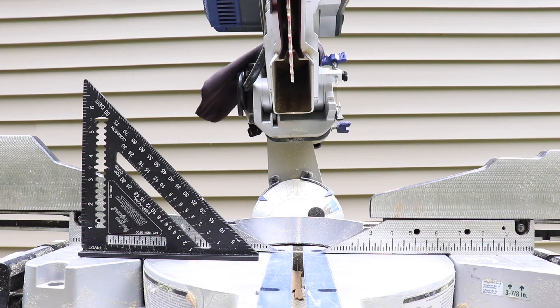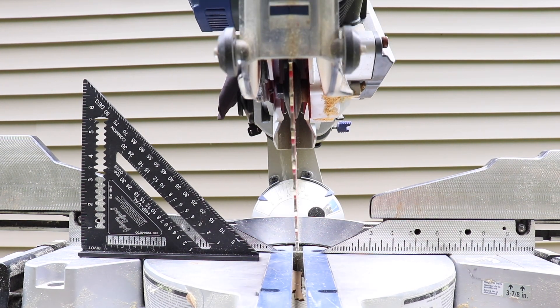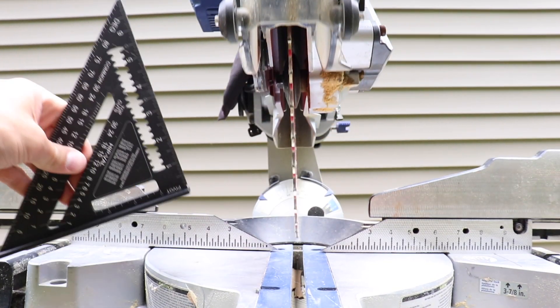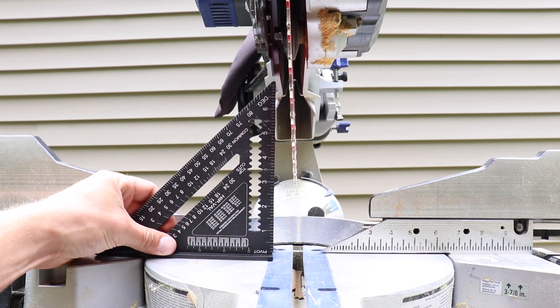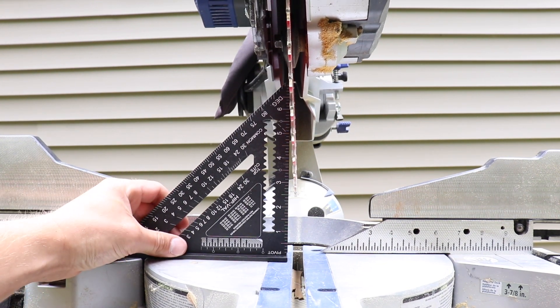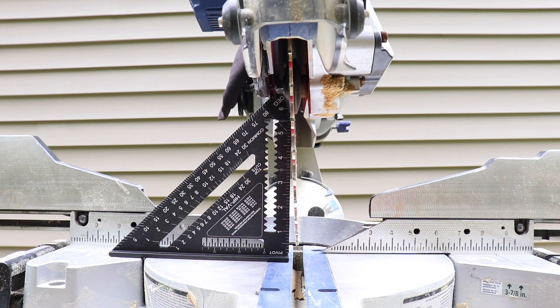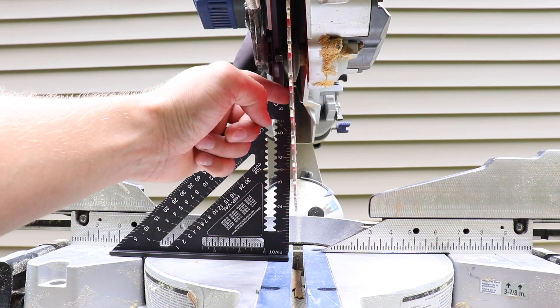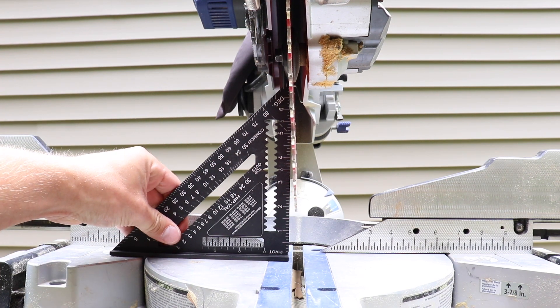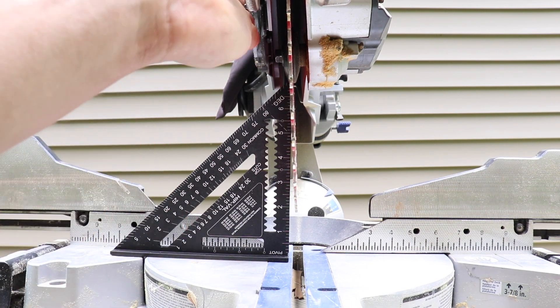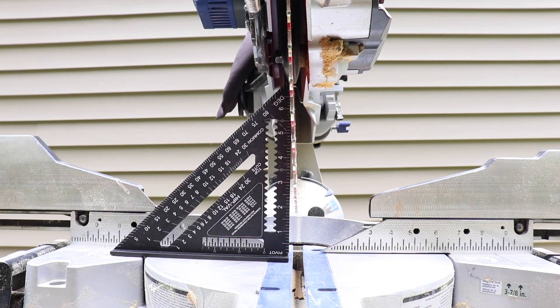So essentially all I'm doing is dropping the blade down and I want to see if it's actually square or not. And as you can see, the speed square is touching the blade at the top, but it's not at the bottom. And so that's telling me that this blade is sitting at an angle and we need to square that up.